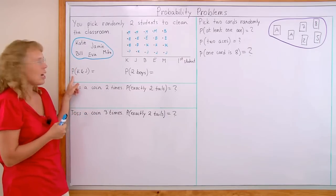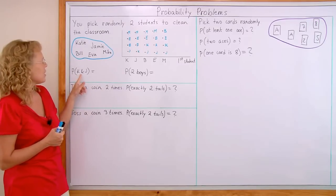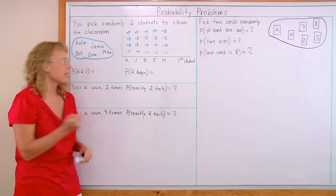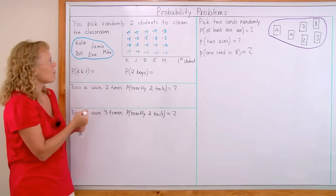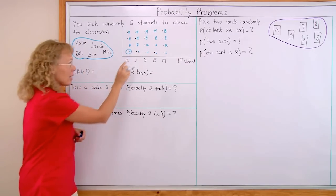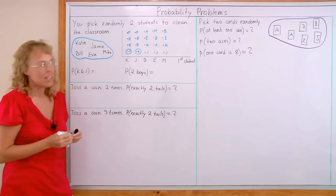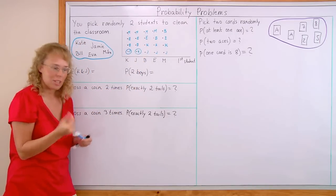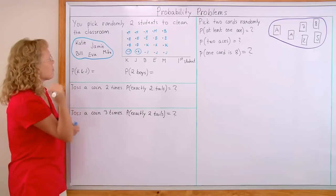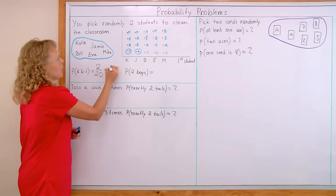Now we just check how many favorable outcomes there are for Katie and Jamie being picked. It's not just one outcome — there's Katie first and Jamie second, and then Jamie first and Katie second. Those two are the favorable outcomes. So we get the probability of 2 over 20, which is 1 tenth.